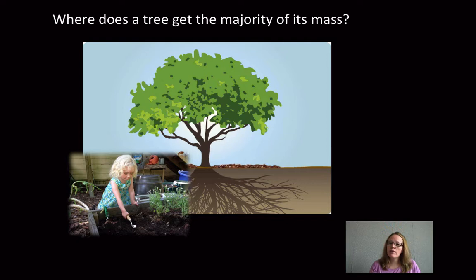So Von Helmont did this experiment where he planted a tree. He watched it grow for five years, and when he planted it, he measured the mass of the soil and all of the components. And then after it grew for five years, he measured the same things. He found the very small amount of mass in the soil was no longer there, but the tree was over 100 pounds. So that's a lot of mass in five years.